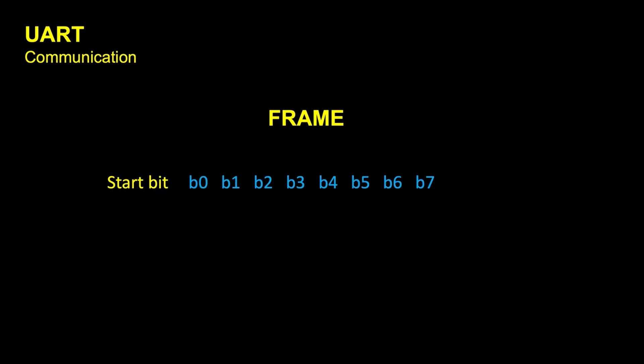In a UART communication the data transmitted is organized into frames. Usually a frame has a start bit that signals the receiver that the data is about to come, then we have the data we want to transmit — in this case 8 bits — and then we have a stop bit to signal that the frame has ended.